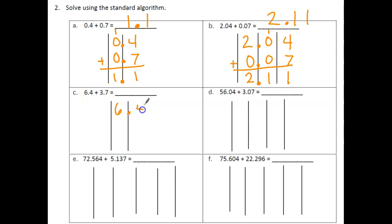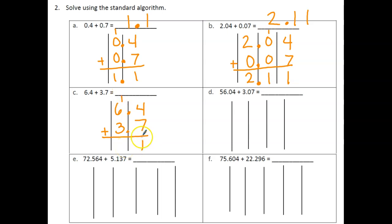Problem C: 6 and 4 tenths plus 3 and 7 tenths. Four tenths plus 7 tenths is 11 tenths again — we regroup 10 tenths as 1 whole. Now 6 plus 3 is 9, plus 1 is 10 ones. We can't put 10 ones in one place, so we rename 10 ones as 1 ten. Our answer is 10 and 1 tenth.